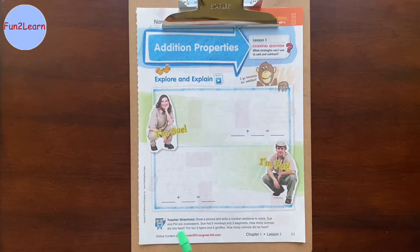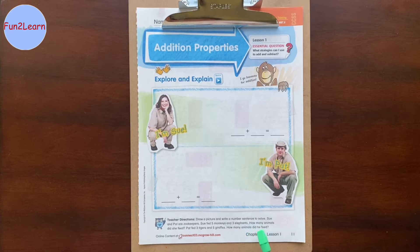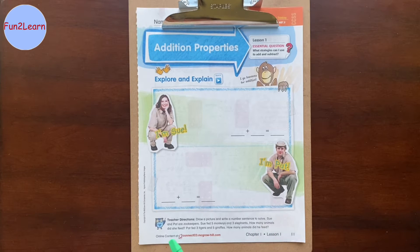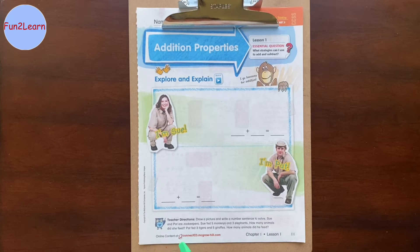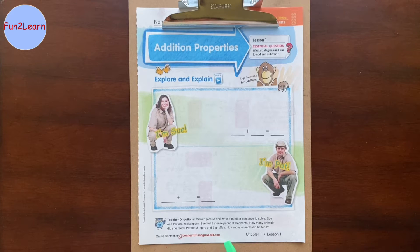Teacher Directions: Draw a picture and write a number sentence to solve. Sue and Pat are zookeepers. Sue fed 5 monkeys and 3 elephants. How many animals did she feed? Pat fed 3 tigers and 5 giraffes. How many animals did he feed?